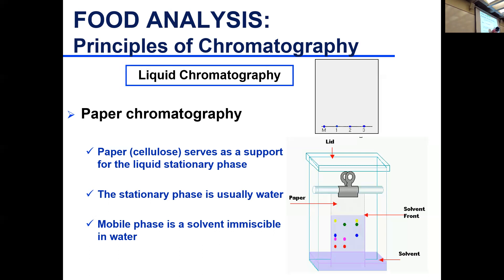You draw a line an inch away from the edge of the paper, then do spots. Your first spot is a marker — a reference for identification — and then you have your samples spotted. You place the paper in a development chamber with a specific immiscible solvent and keep it there until the solvent reaches the top of the paper or a marked point.